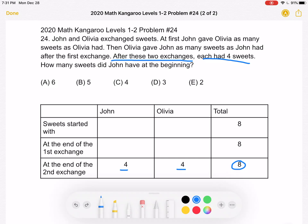Now we can use information from the problem and try to work backwards. Let's start by trying to figure out what happens during the second exchange. Olivia gave John as many sweets as John had after the first exchange. So if Olivia gives John the same amount of sweets as John has, the number of sweets that John has doubles during the second exchange.